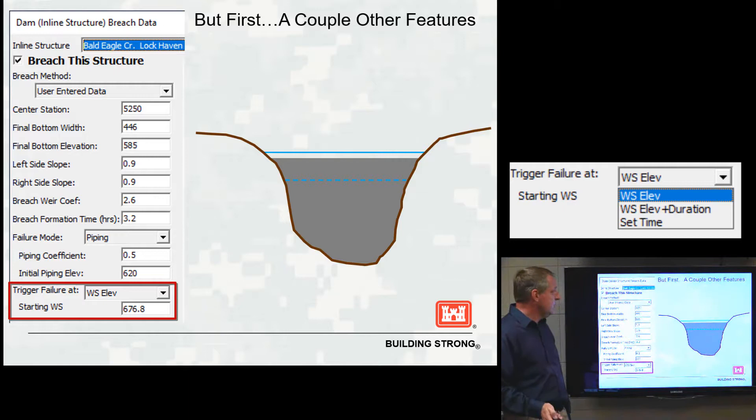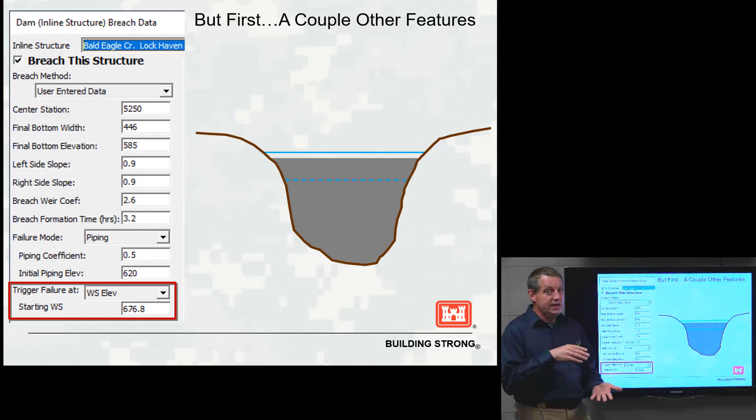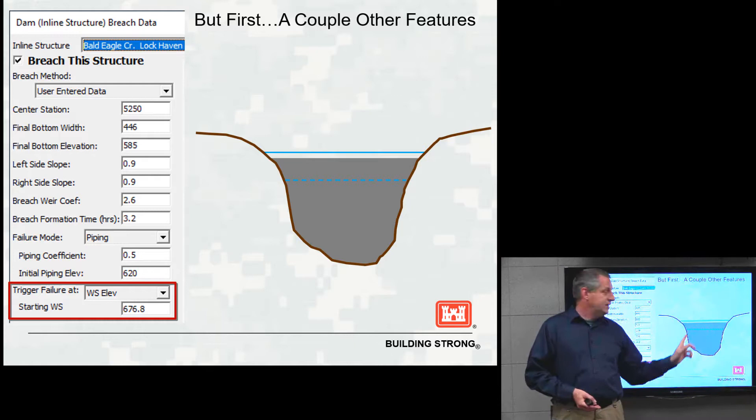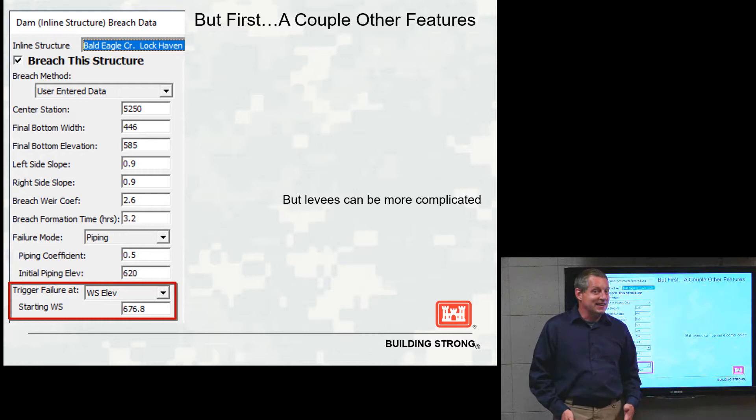Before getting to those hard parameters, let's talk about some nuances that aren't as hard but where you can make mistakes. One of them is: at what water surface elevation should your dam breach? It should be the elevation that overtops it — unless you're dealing with a piping failure or mass-wasting failure where the embankment gets saturated first. We have a parameter that allows you to determine when it's going to fail, using a trigger elevation.